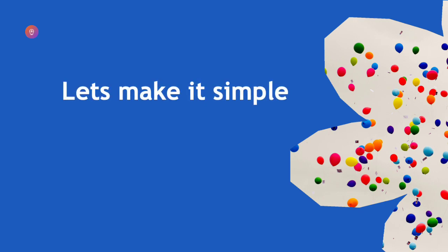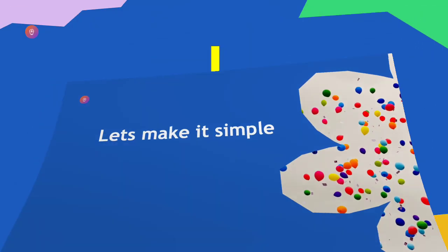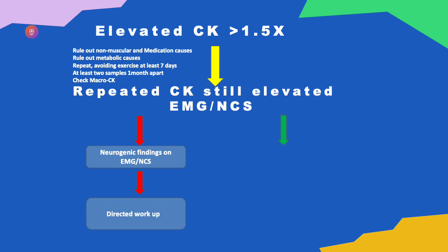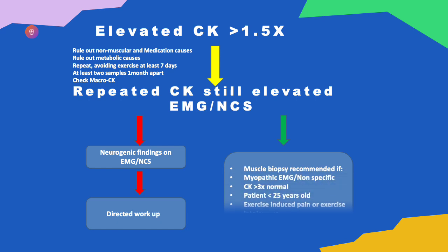To summarize with a flowchart: if a patient has elevated CK level, consider all non-neuromuscular and non-myopathic causes. Repeat the sample at least one month apart and consider checking macro CK and CK isoenzymes. If CK remains elevated, request EMG and nerve conduction studies. Neurogenic findings direct a targeted workup; myopathic or nonspecific changes recommend muscle biopsy. Muscle biopsy is also recommended if CK is more than three times above normal, patient age is less than 25, there is exercise-induced pain or intolerance, or women with CK less than three times above normal.